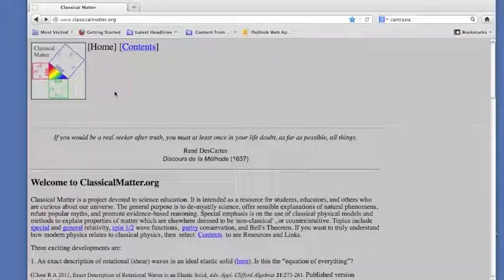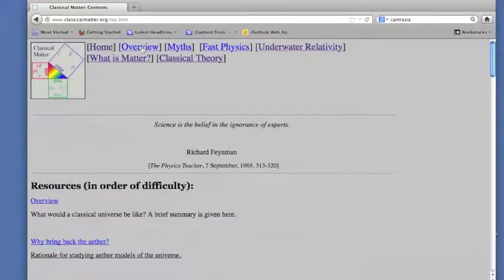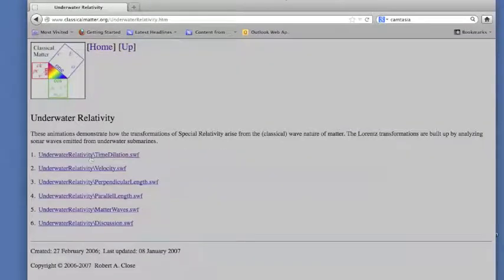Let's look at some animations that will explain to you how the relationships in special relativity come about. The site is called classicalmatter.org and we'll select underwater relativity. The basic idea behind these animations is that if you make all your measurements using waves, then the relationship between measurements by different observers will be the same as what we find in special relativity.